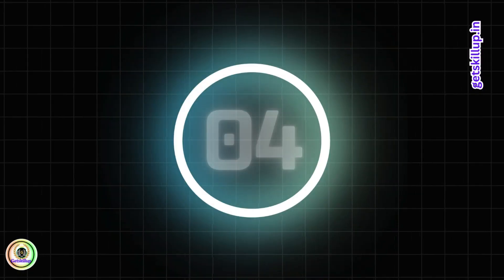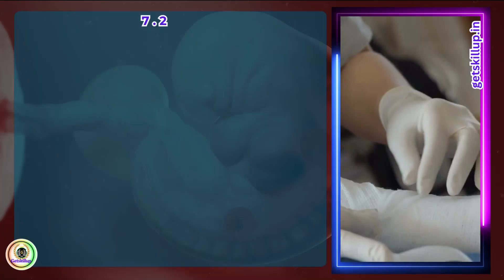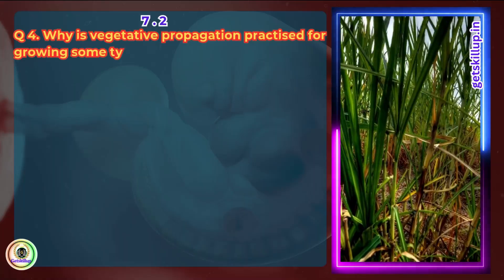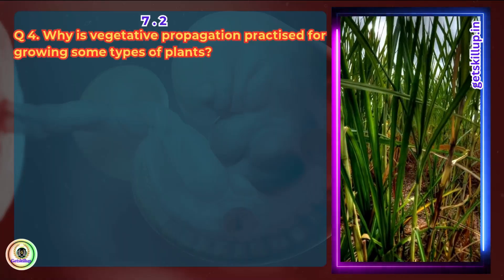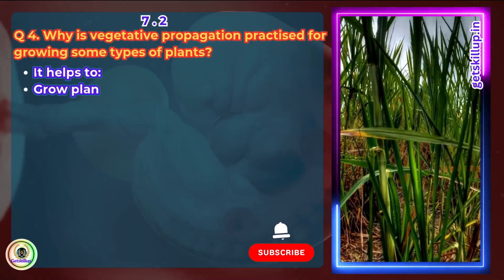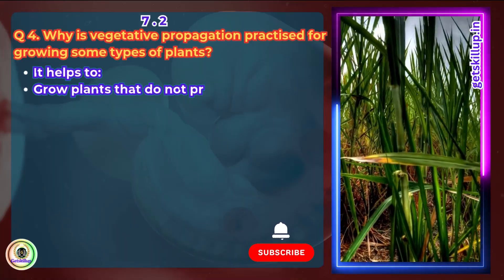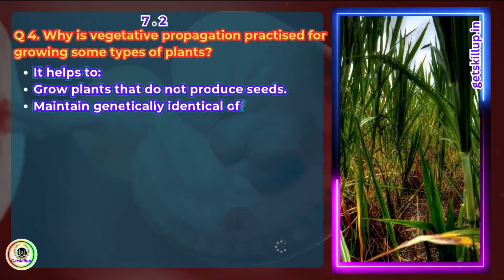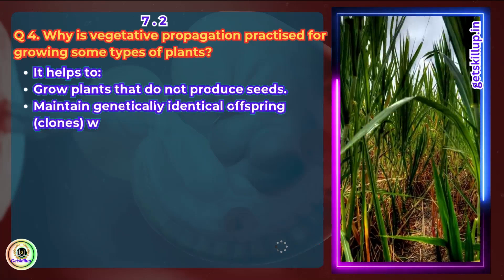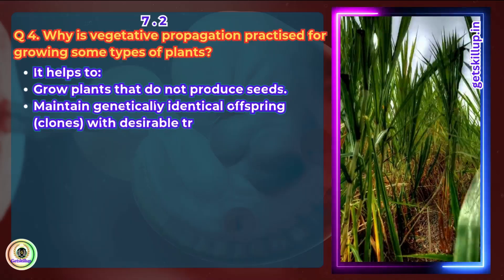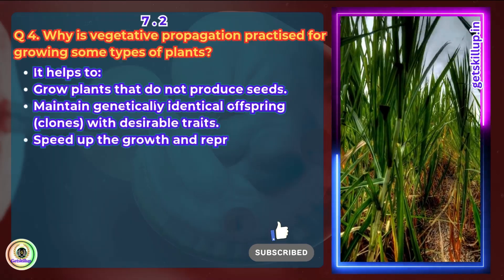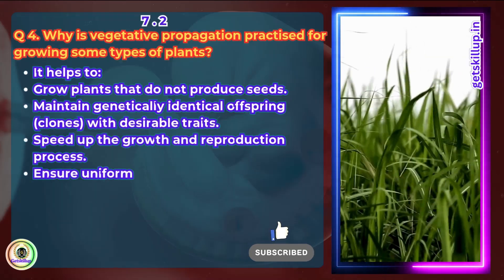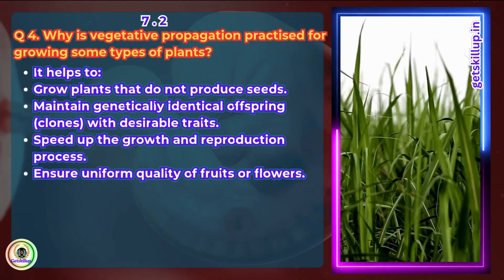Question 4: Why is vegetative propagation practiced for growing some types of plants? It helps to grow plants that do not produce seeds, maintain genetically identical offspring with desirable traits, speed up the growth and reproduction process, and ensure uniform quality of fruits and flowers.